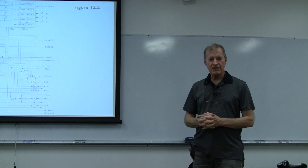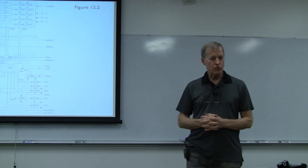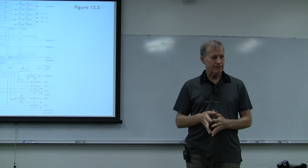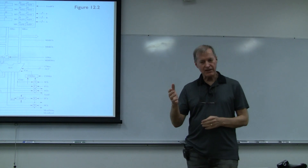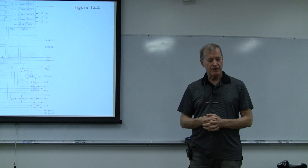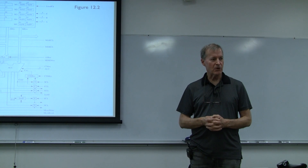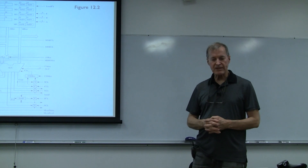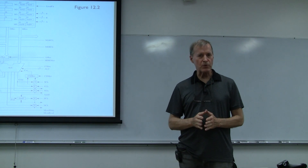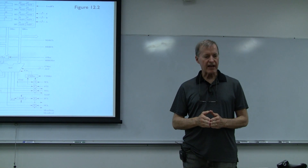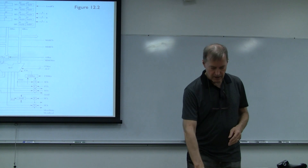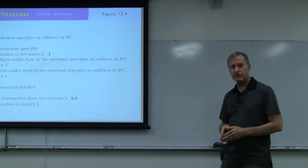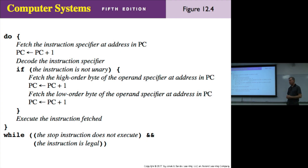Last time we introduced the data section of the CPU and saw how the control signals could route data in the data section of the PEP9 CPU. We did a little demo. What we did at the end of class last time is we looked at the von Neumann cycle. Figure 12.4 is a description of the von Neumann cycle at this level of abstraction.